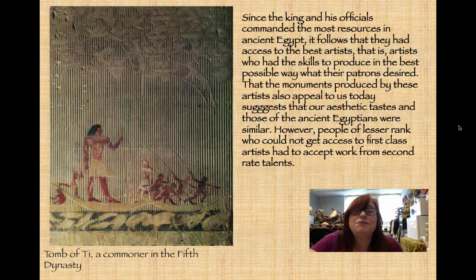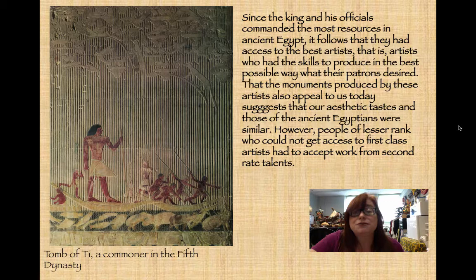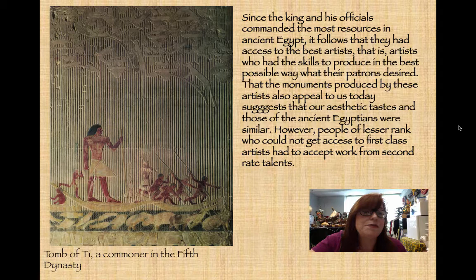Since the king and his officials commanded the most resources in ancient Egypt, they had access to the best artists — those with skills to produce what their patrons desired. These monuments appeal to us today because they're so beautiful. People of lesser rank would not get access to first-class artists and would have to accept work from second-rate talents — although as you can see here, this is from the tomb of Ti, a commoner in the fifth dynasty, and it looks pretty good.